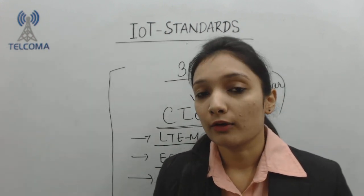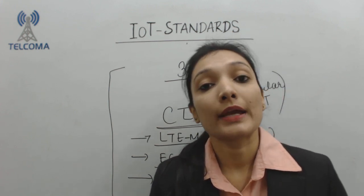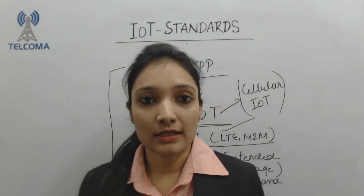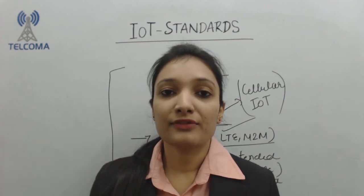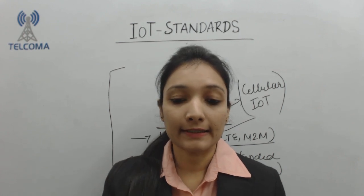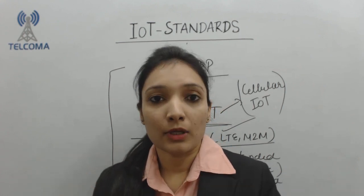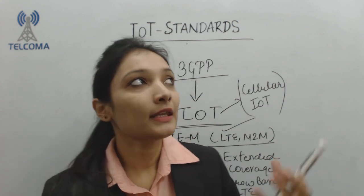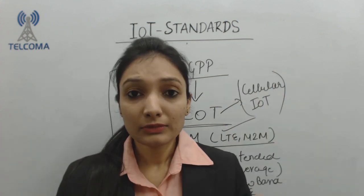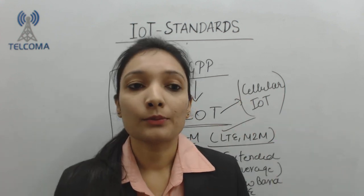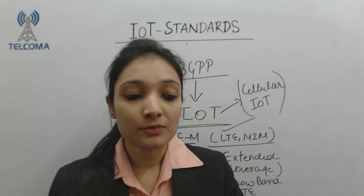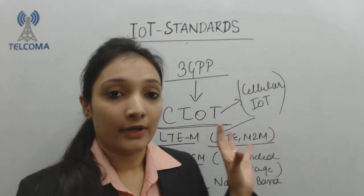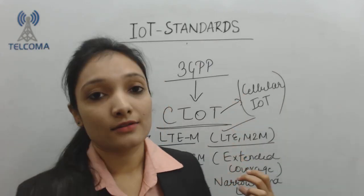These are the various standardizing bodies working across the globe for the standardization process of the Internet of Things, so that devices in different environments collecting different kinds of data from sensors can easily connect and exchange information with other devices. Just as Wi-Fi — the IEEE standard — works well across heterogeneous systems due to good open standards, cellular networks have also succeeded because of standardization.